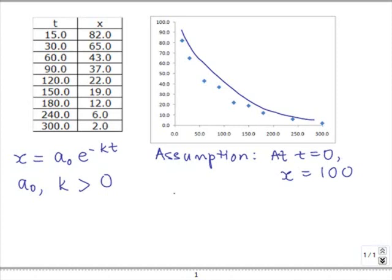So given this assumption, then we can easily find a0, and a0 turns out to be 100 because when t equals 0, e to the negative kt will be equals to 1, no matter what the values of k may be.